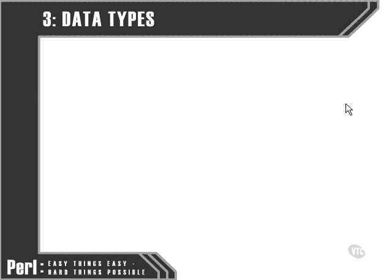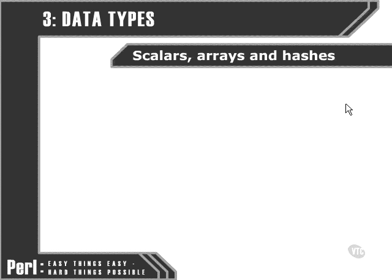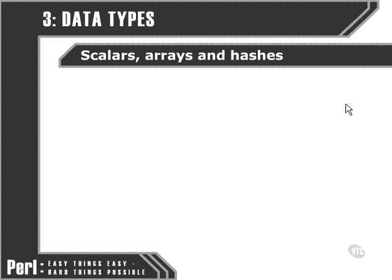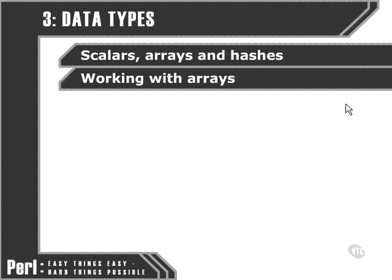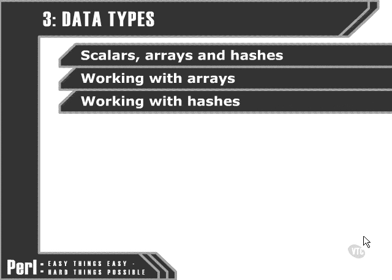In this chapter, we're going to look at some of the ways in which we can arrange data using Perl. First of all, we're going to look at the difference between Perl's basic data types — that is, scalars, arrays, and hashes. And then we're going to look in detail at arrays, and we're also going to look at hashes.